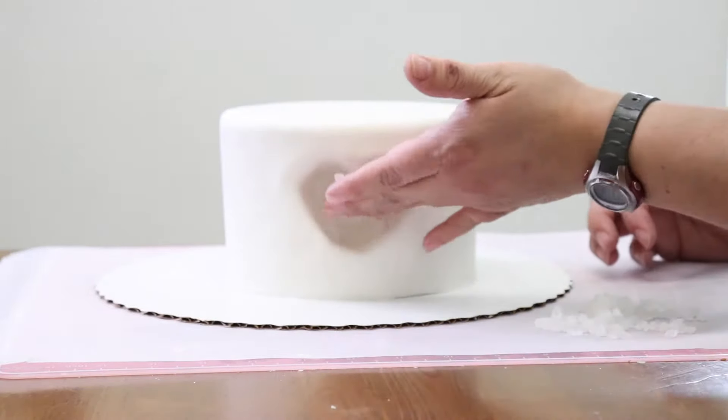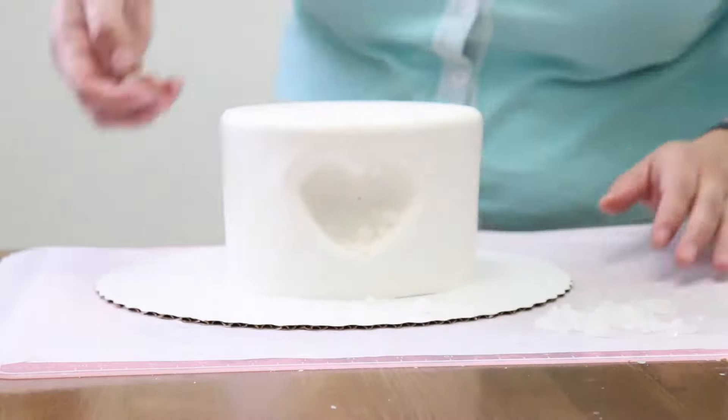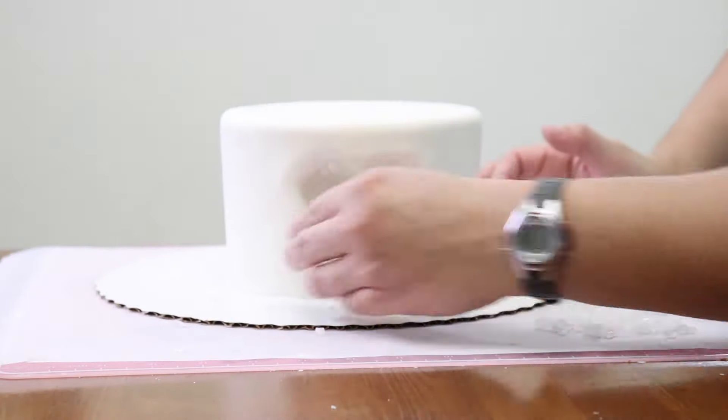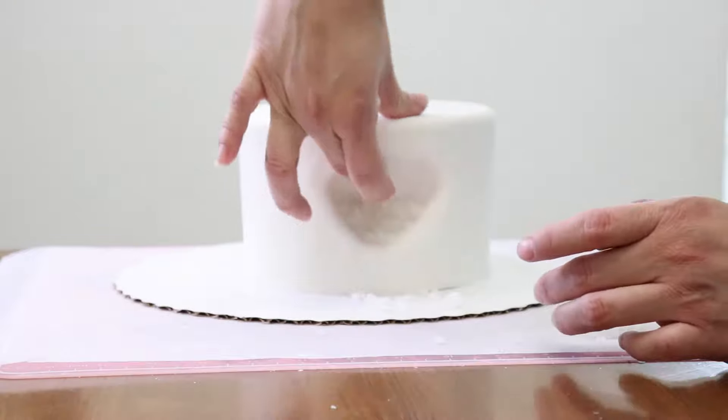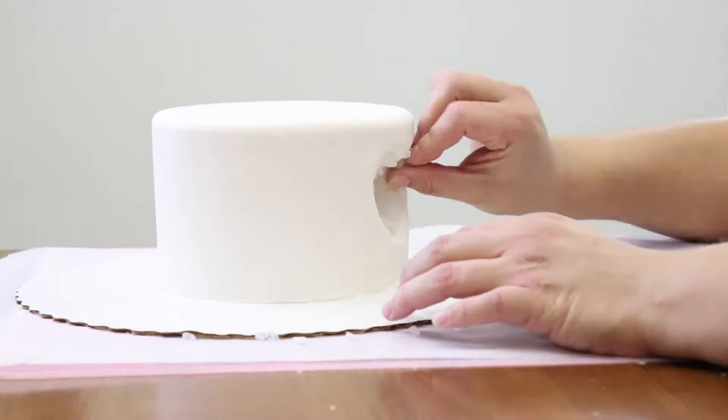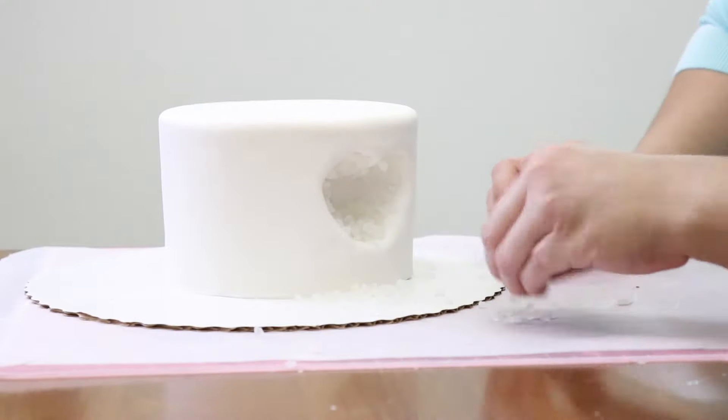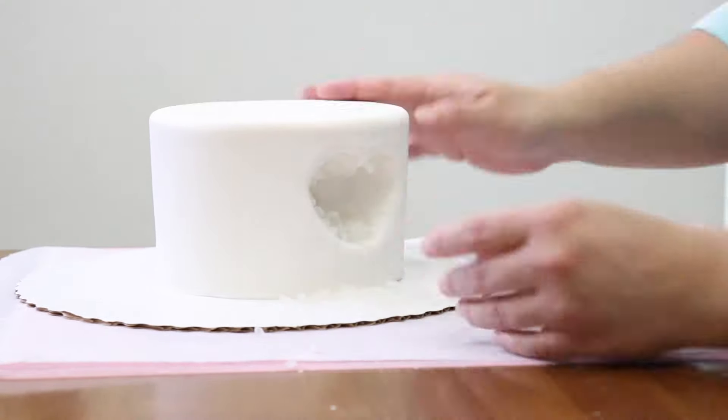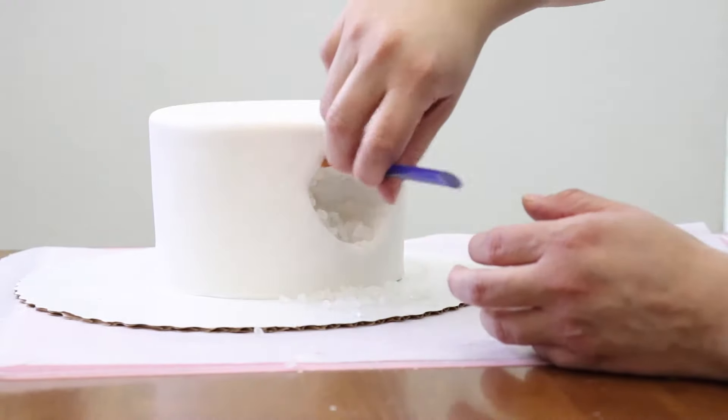Aside from the piping gel, you need to push in the rock candy into the cake so they actually stick to it. And if you need to add more piping gel to the cake, just go for it and add the pieces of candy until everything is covered. You can find the materials used in the description box below.